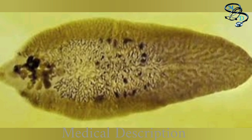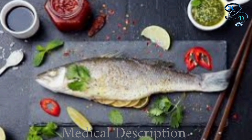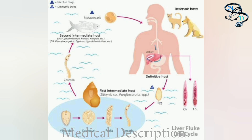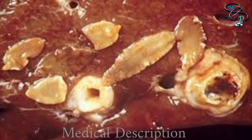What is Clonorchiasis or Clonorchis infection? Clonorchis is a liver fluke parasite that humans can get by eating raw or undercooked fish from areas where the parasite is found. It is found across parts of Asia. Clonorchis is also called the Chinese oriental liver fluke, and the liver fluke can infect the liver, gallbladder, and the bile ducts in humans.